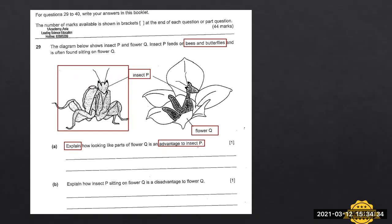So we can see here, firstly they need to explain how this animal looks like part of flower Q is an advantage to this insect. And this is one mark. So according to the definition of explain, the students need to give reason. So let's see how can these questions be answered accurately.